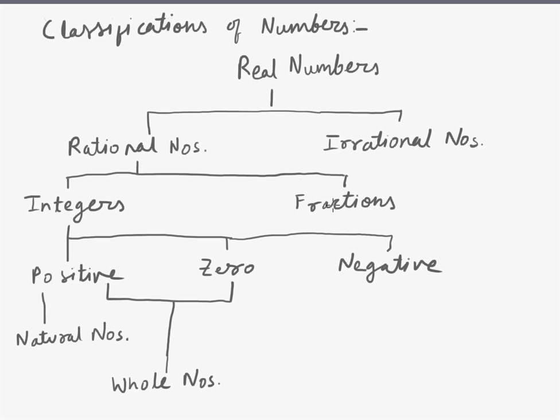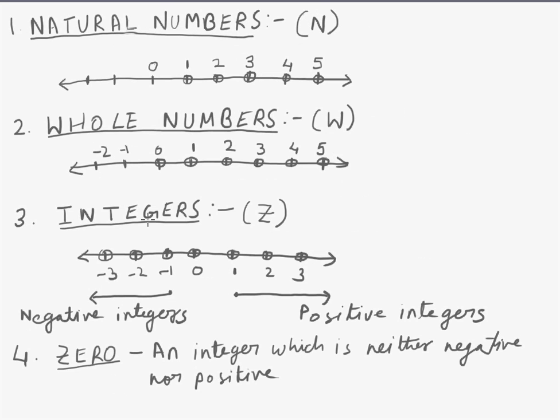The rational numbers can further be classified into integers and fractions. Now integers, what are integers? Integers are basically positive, zero, and negative. The positive integers are also called natural numbers. Now, if the set of natural numbers or the positive integers are included with a zero, then the whole set becomes whole numbers. So this is the complete representation of real numbers.